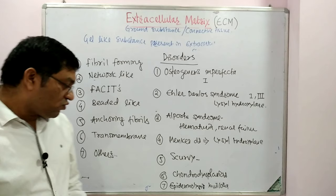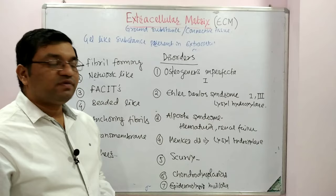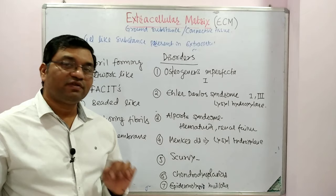Epidermolysis bullosa is due to a defective gene for collagen 7. These are the various disorders related with collagen synthesis in the extracellular matrix.